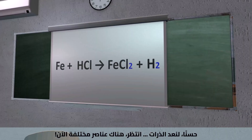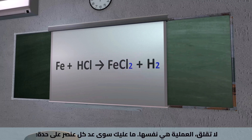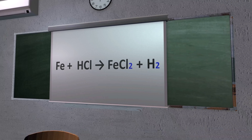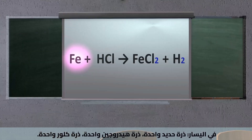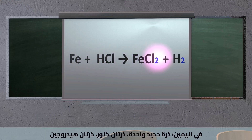Let's count the atoms. There are different elements now, but don't worry — the process is the same, just count each element separately. On the left: one iron, one hydrogen, one chlorine. On the right: one iron, two chlorine, two hydrogen.